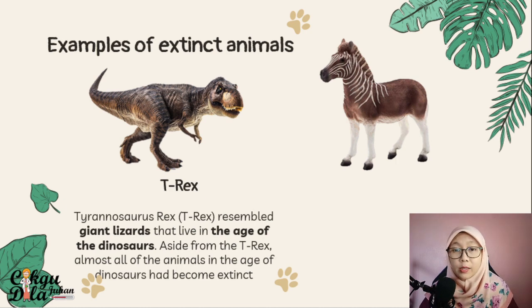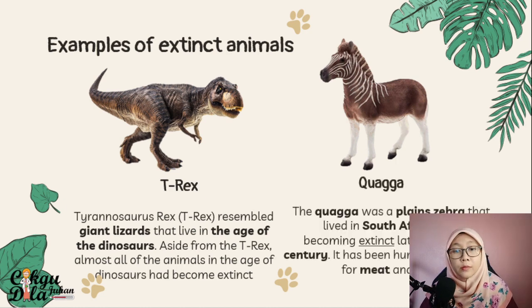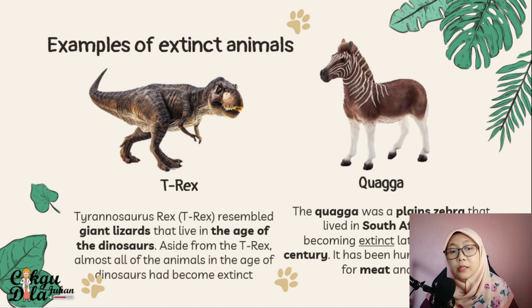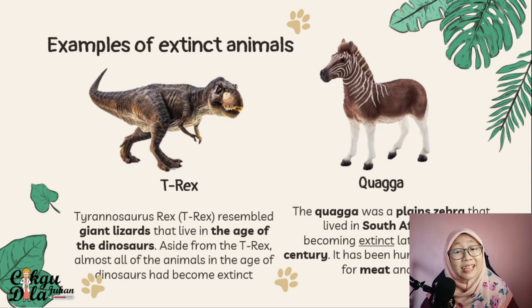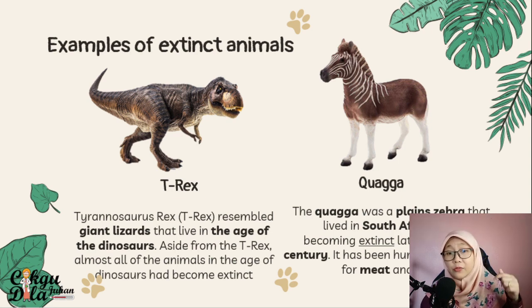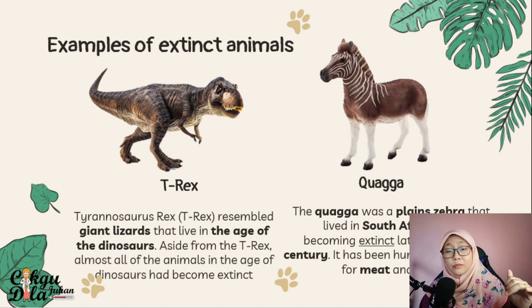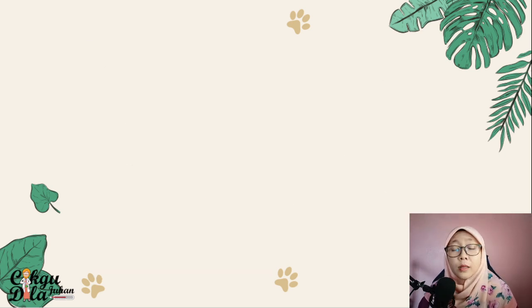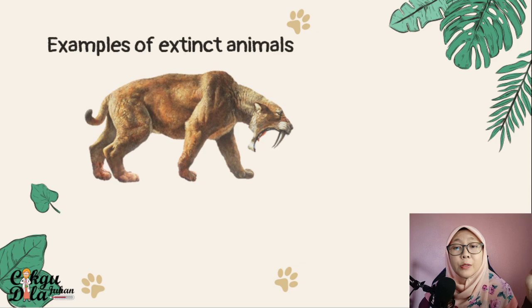We also have the quagga. The quagga is a plains zebra that lived in South Africa until it became extinct in the late 19th century. It was hunted to extinction for its meat and skin.